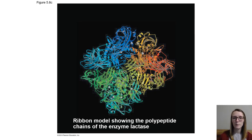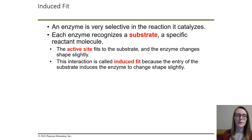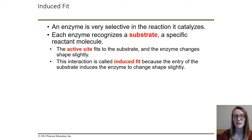Enzymes are a type of protein, and proteins are made up of polypeptide chains. A good way to visualize those polypeptide chains is by using a ribbon model. This specific model is showing the enzyme lactase, and lactase is very specific to its substrate. A substrate is a specific reactant molecule. The active site of the enzyme fits specifically to a substrate, and once the active site and the substrate bind together, the enzyme can then change its shape slightly — this is called an induced fit. When the enzyme changes its shape, it's either binding molecules together to make one big molecule, or it is breaking up one big molecule into several different molecules.